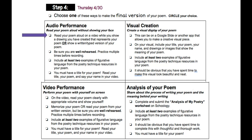So, your audio performance. You are reading your poem aloud on a video while you show a drawing of what you have created that represents your poem. This can be written or typed. Be sure that you are well rehearsed — practice multiple times before recording. Include at least two examples of figurative language. You must have a title for your poem. Read your title, your poem, and say your name.